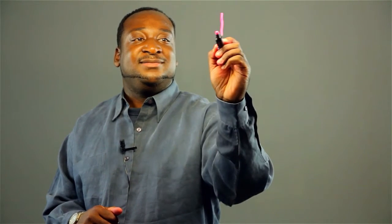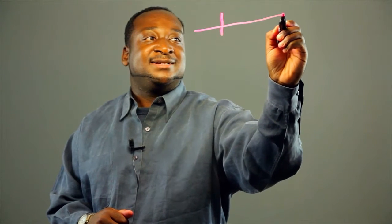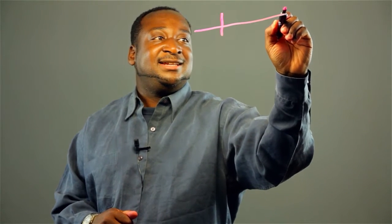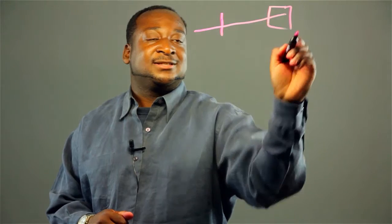First, you want to get a piece of hair — a real thin hair — and then you want to take an infrared beam and pass it through the hair and let it hit a wall or a surface.